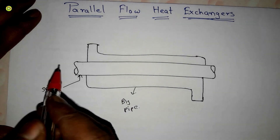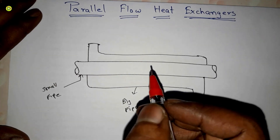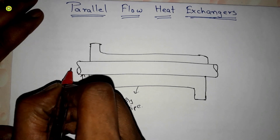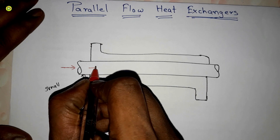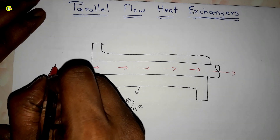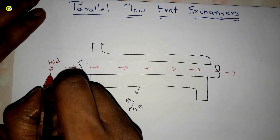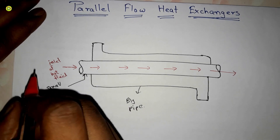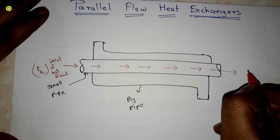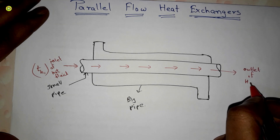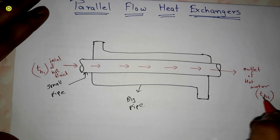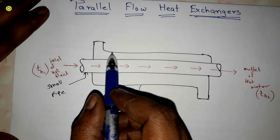Now in this small pipe, which is inside the big pipe, we have hot fluid flowing in this direction — coming from this side and going out from the other side. This is the inlet of the hot fluid, and it has a temperature Th1. This is the outlet of the hot fluid, and it has a temperature Th2.